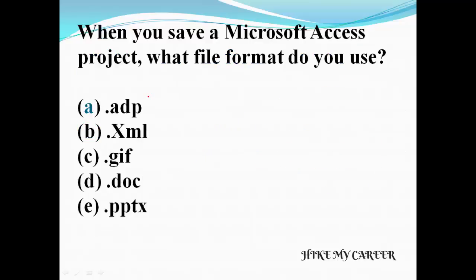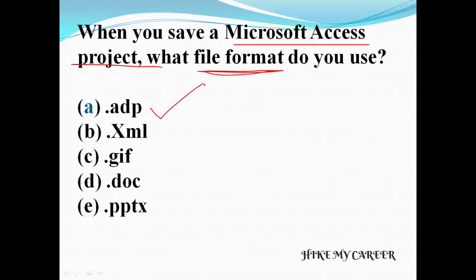Next question: when you save your Microsoft Access project, what file format do you use? A: .adp, B: .xml, C: .gif, D: .doc, E: .ptx. Answer is .adp — Microsoft Access project file format is .adp.